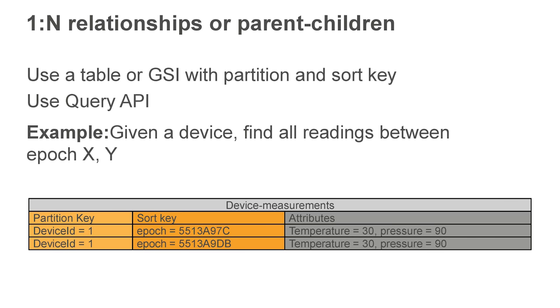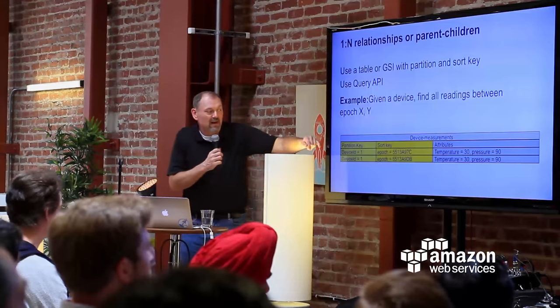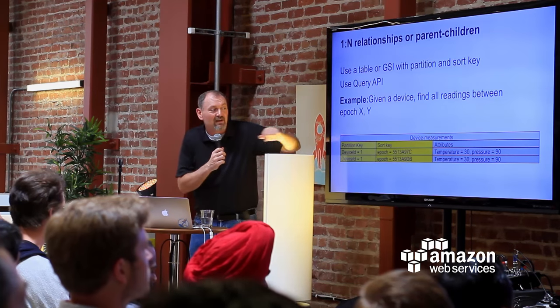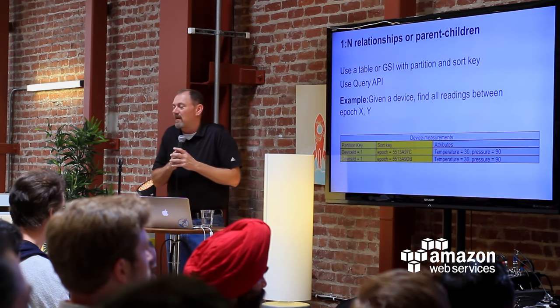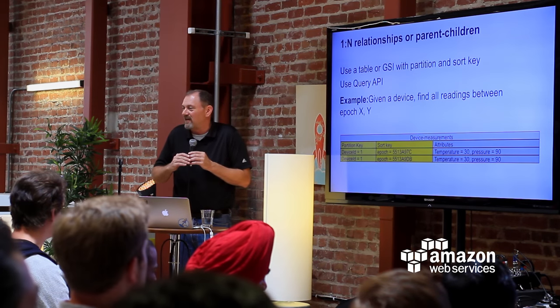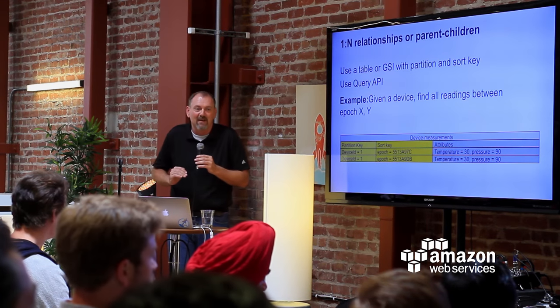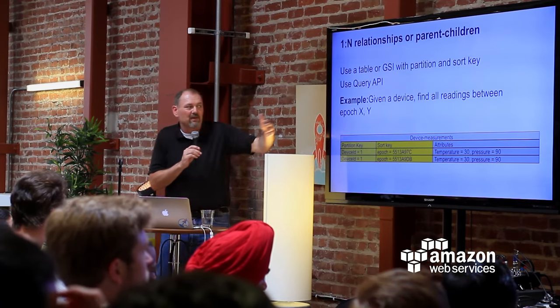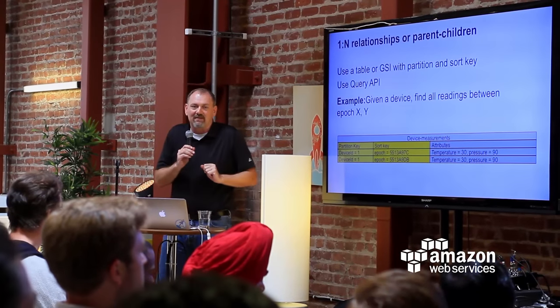One-to-many relationships are built into the table structure using a partition and sort key. For an IoT scenario: partition key is device ID, sort key is timestamp. Every reading comes into DynamoDB with a different timestamp but the same device ID, laid out linearly on disk. Execute a query saying 'give me readings between these two timestamps' — very easy to find the records associated with that device in that range.